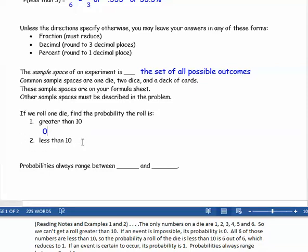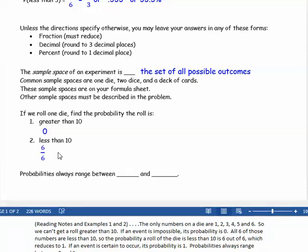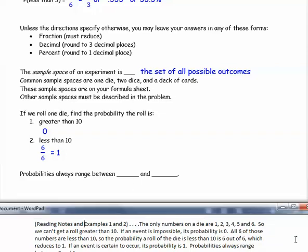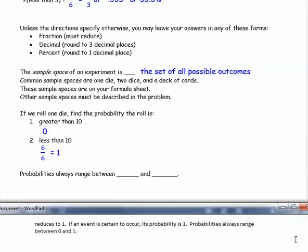Example two, the probability the roll is less than ten. Well, all six of the numbers, 1, 2, 3, 4, 5, 6, are less than ten. So the probability that a roll of the die is less than ten would be all six numbers out of six. So six out of six, which reduces to one. So if an event is certain to occur, then its probability is one.